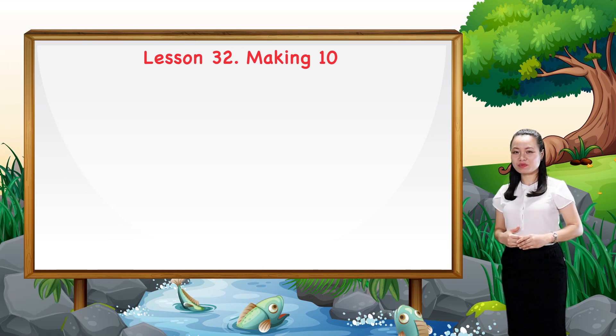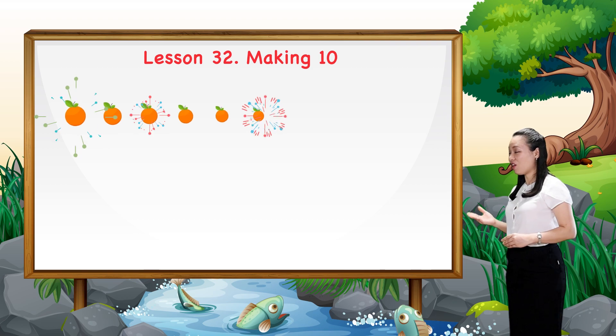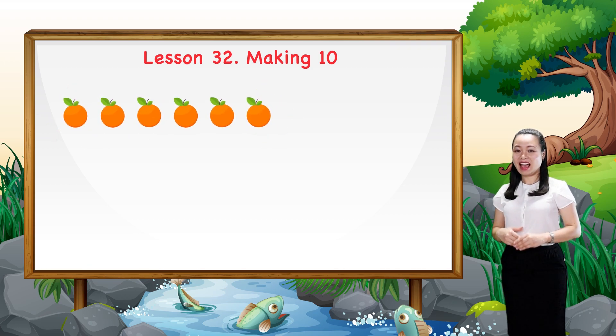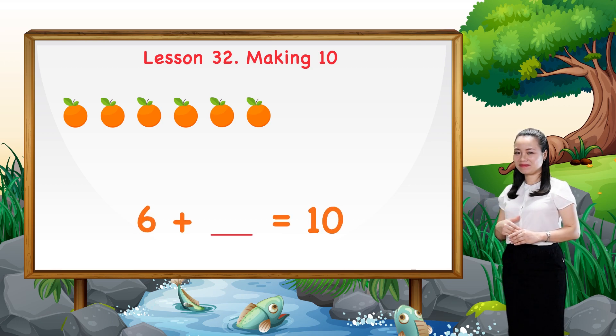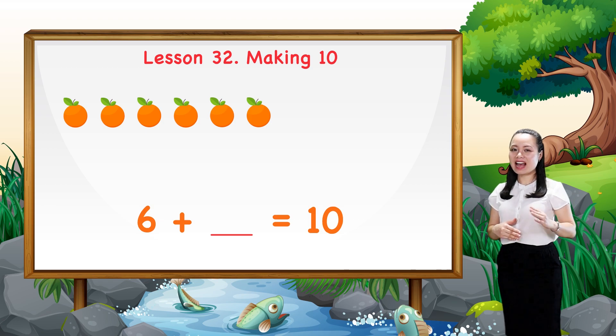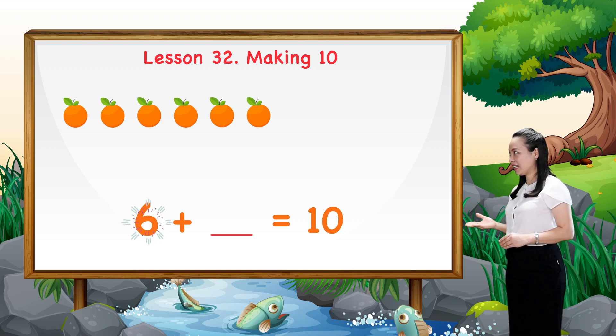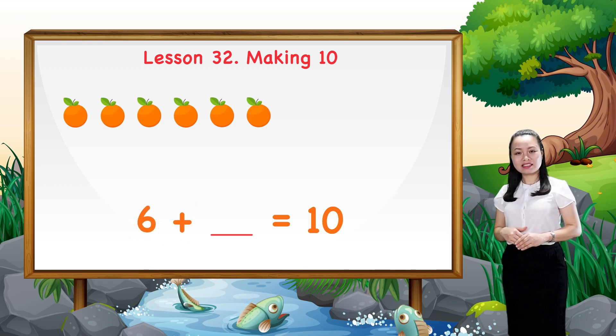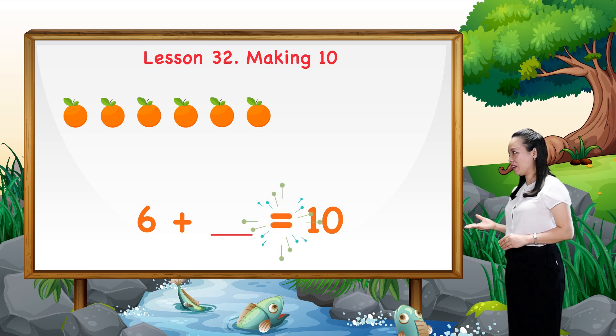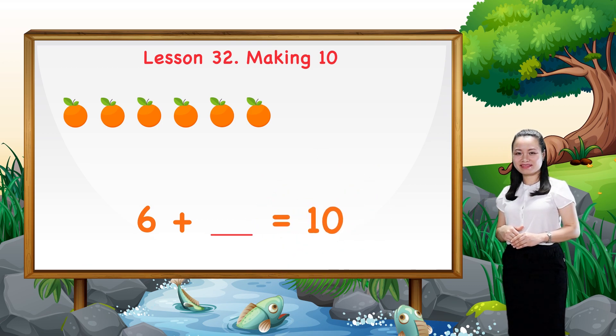Suppose we have six oranges. How many more oranges do we need to have a total of ten? We write in numerals. We say six plus something equals ten. There's an unknown number here.